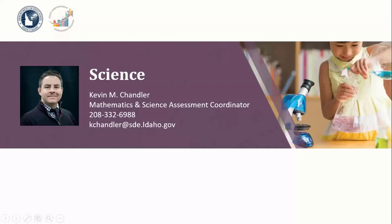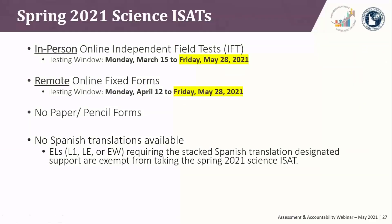Kevin Chandler here at the department. A few updates for science. Remember the science ISATs are required for students in grades 5, 8, and 11. The testing windows for in-person online independent field tests and the remote online fixed form both close on Friday, May 28th. Also remember that for science ISATs there are no paper-pencil and no Spanish translations because we are administering an IFT. The grade 11 science ISAT has replaced the biology and chemistry EOCs. There is no makeup testing from last school year, and because this is an independent field test, there will be no individual student reports or reported scores from this year's science ISATs.